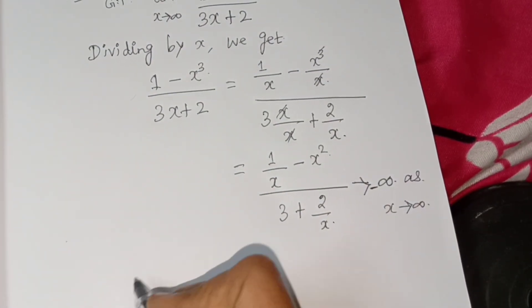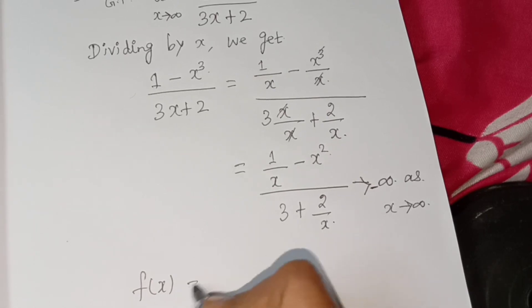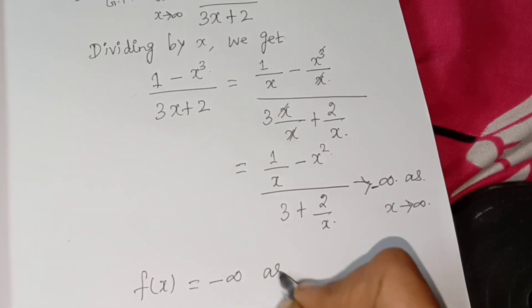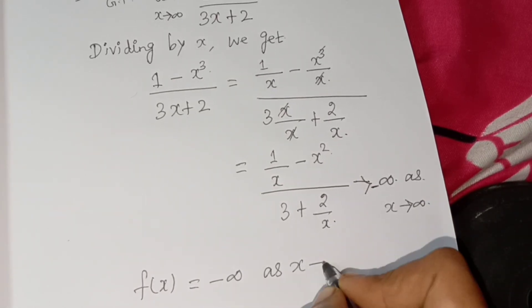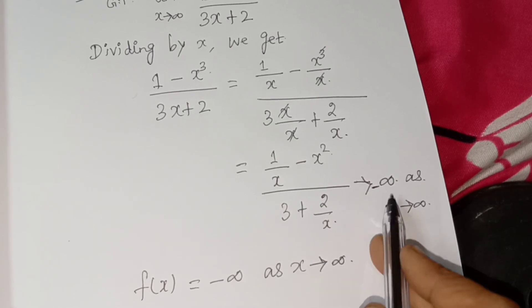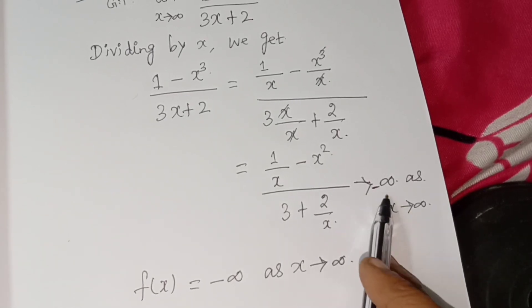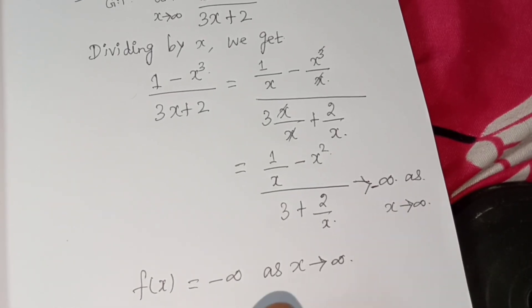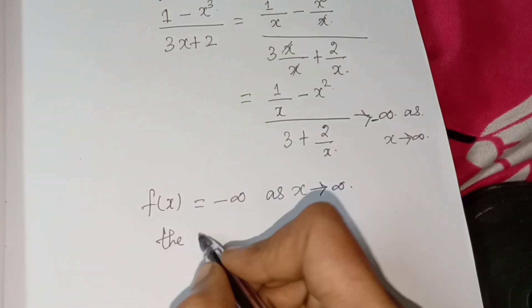f of x equals minus infinity as x tends to infinity. So f of x equals minus infinity as x tends to infinity, the limit does not exist.